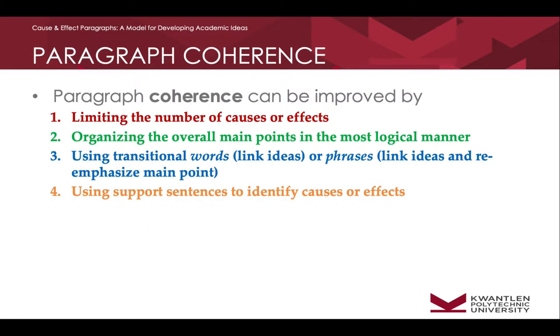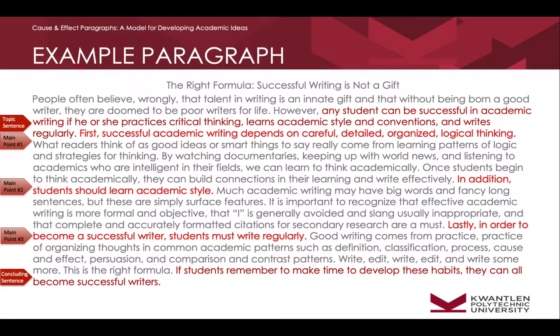Now let's look at the first technique of coherence: limiting the number of causes or effects. In this example paragraph, we have a topic sentence at the beginning—it's the second sentence of the paragraph. If it's not the first sentence, it should be the second. Don't go too far into the paragraph without clearly identifying for your reader what your topic is and what your main point is. The topic sentence here is: 'Any student can be successful in academic writing if he or she practices critical thinking, learns academic style and conventions, and writes regularly.'